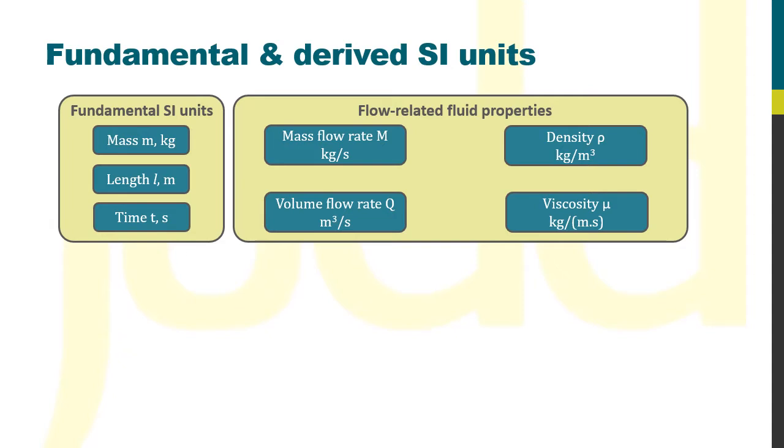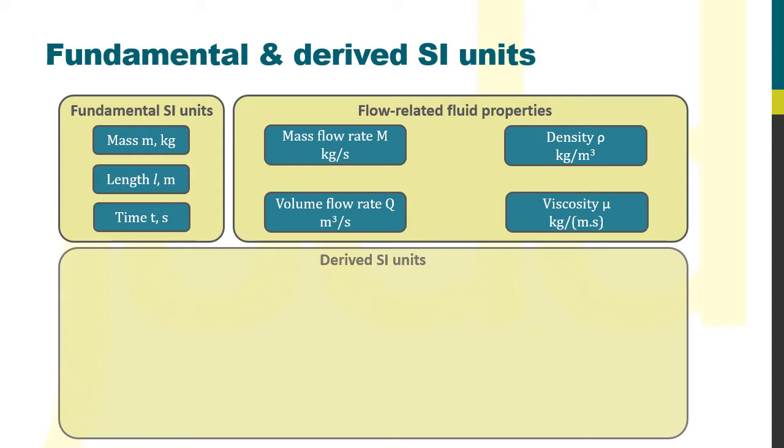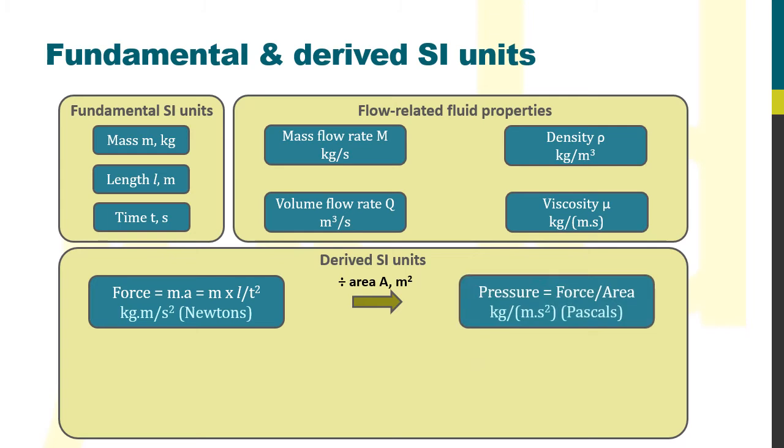Now, let's look at the key derived SI units. These are based on the fundamental SI units and define other key parameters, such as force, which is mass times acceleration. So a Newton takes units of kilogram meters per second squared. Pressure is force divided by area, so it takes units of kilograms per meter per second squared. That's a Pascal.